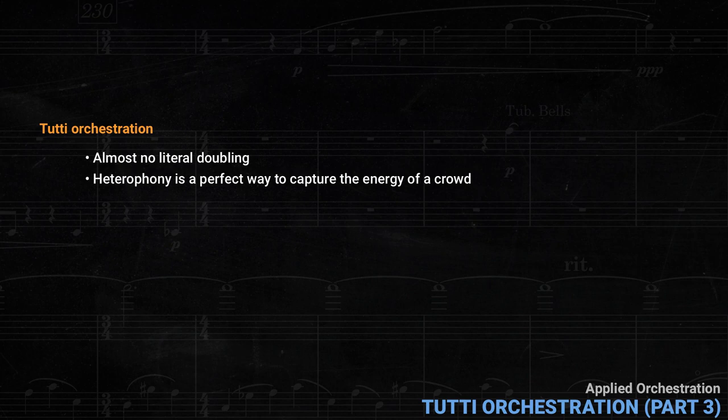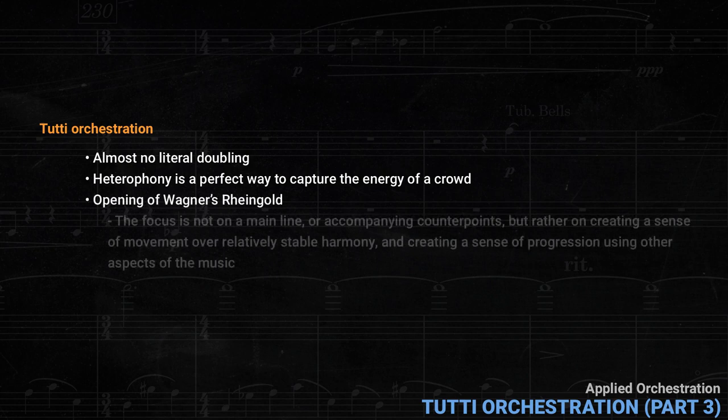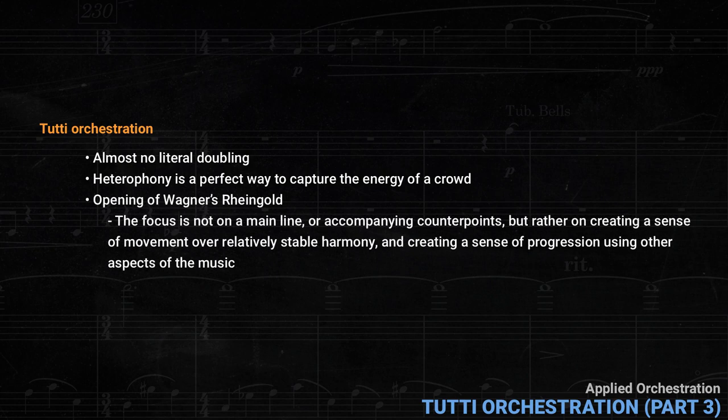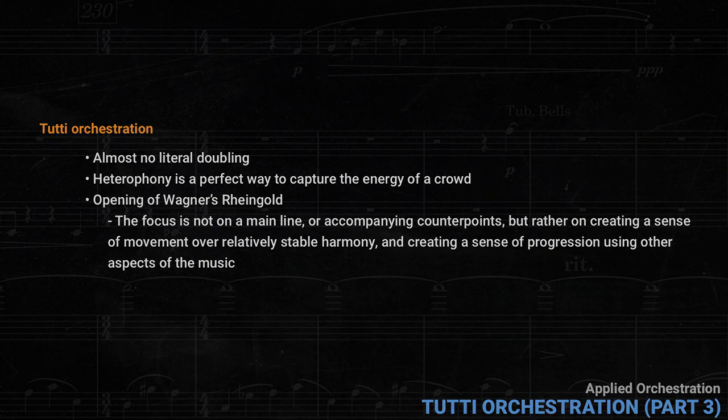This kind of textural orchestration probably began with the opening of Wagner's Rheingold. The focus there also is not on a main line or accompanying counterpoints, but rather on creating a sense of movement over relatively stable harmony and creating a sense of progression using other aspects of the music. As the 20th century moved on, this kind of orchestral thinking became more and more common.